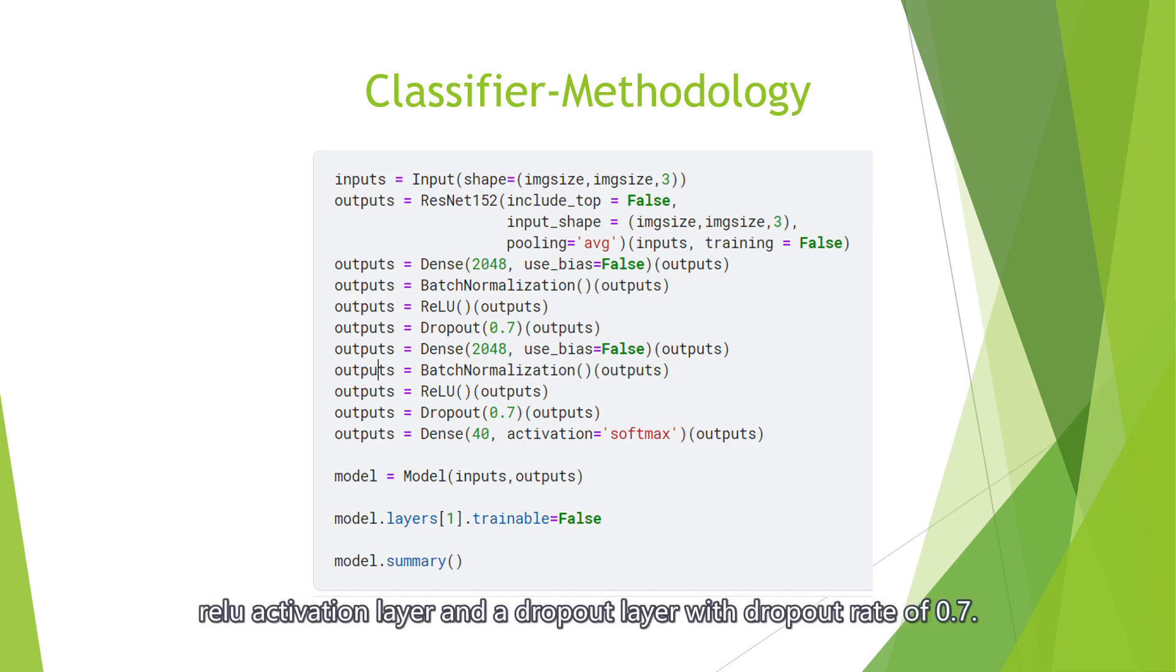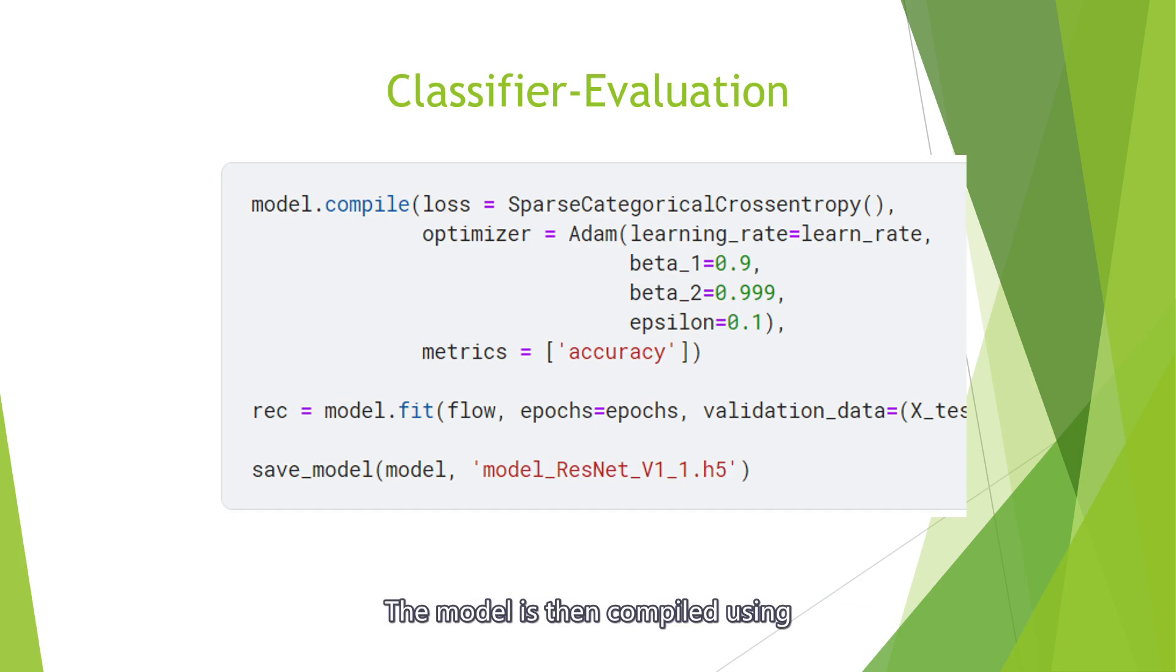There's also a dropout layer with dropout rate of 0.7. The model is compiled using sparse categorical cross-entropy loss function and the Adam optimizer, and then is saved to a file called model ResNet version 1.1.